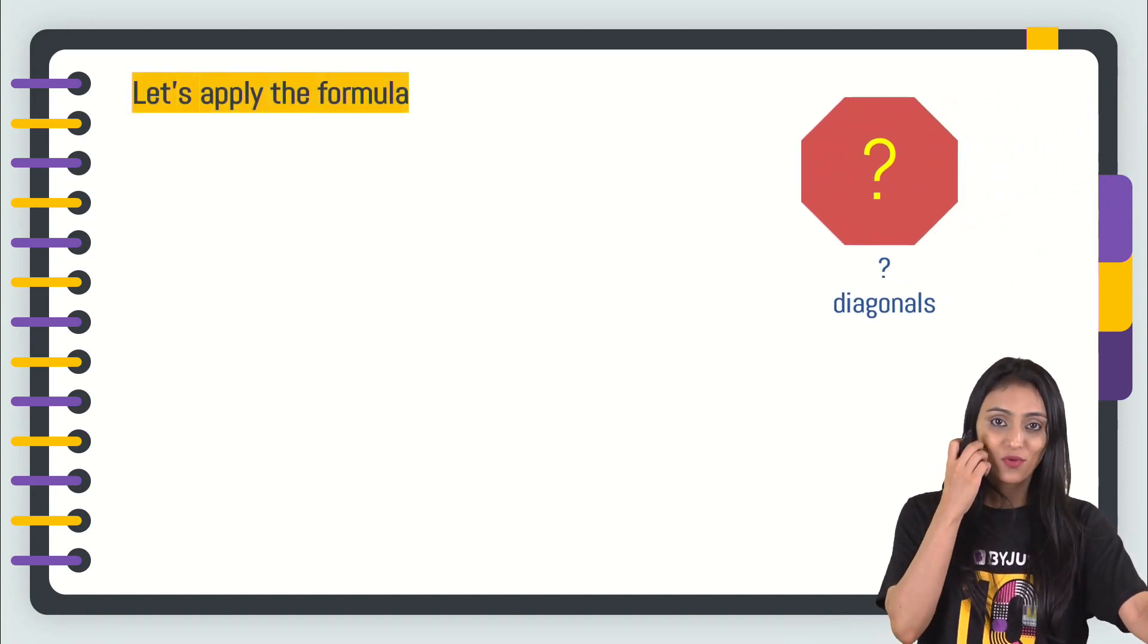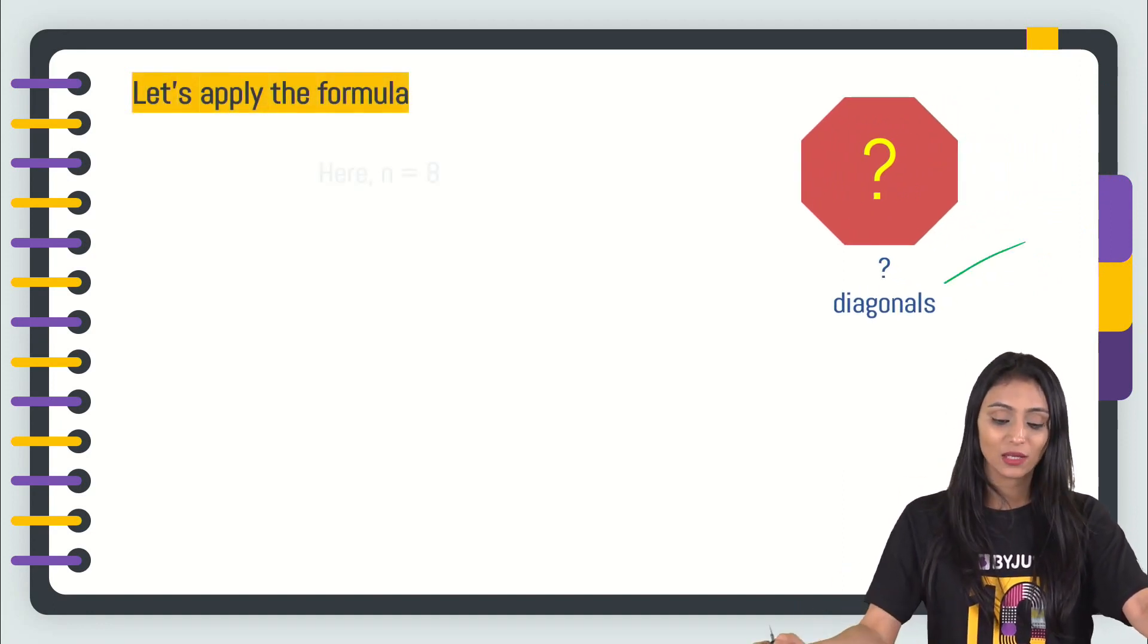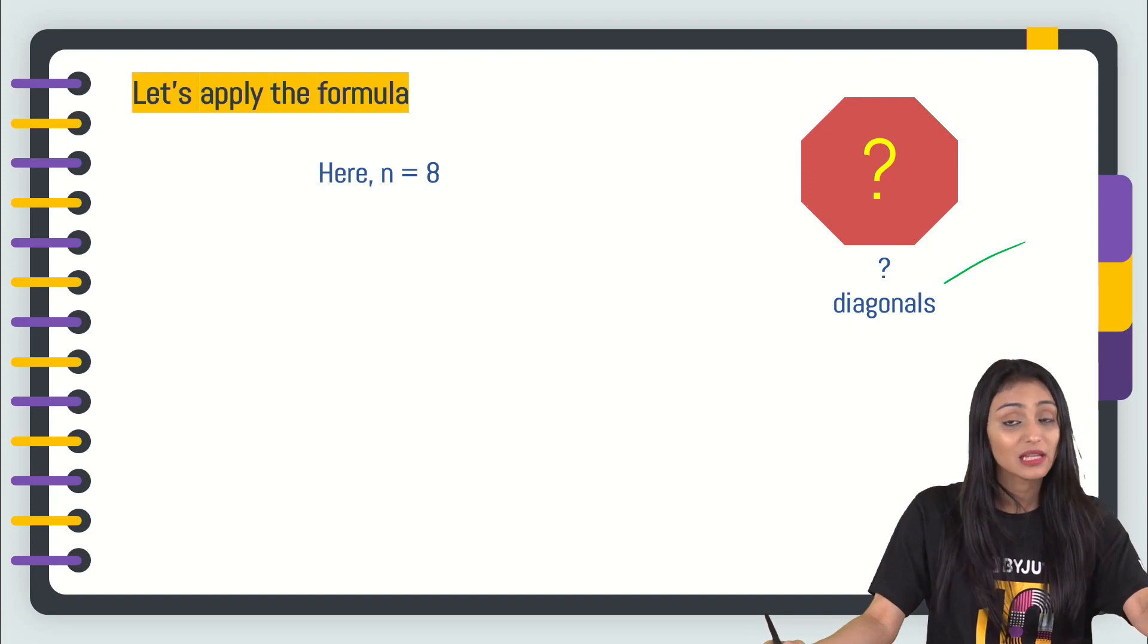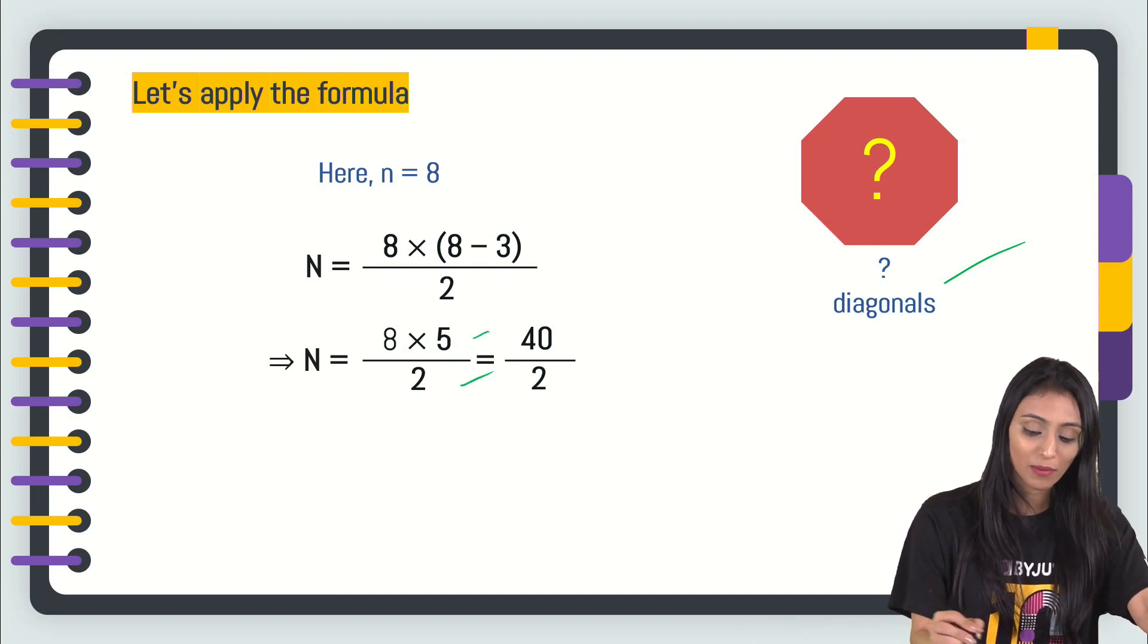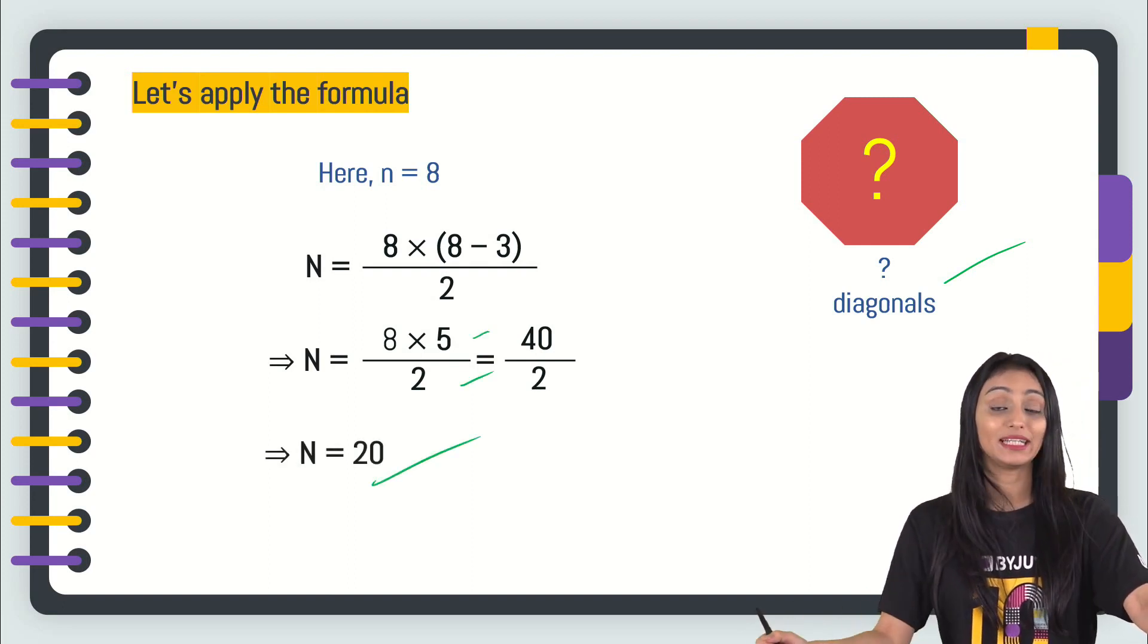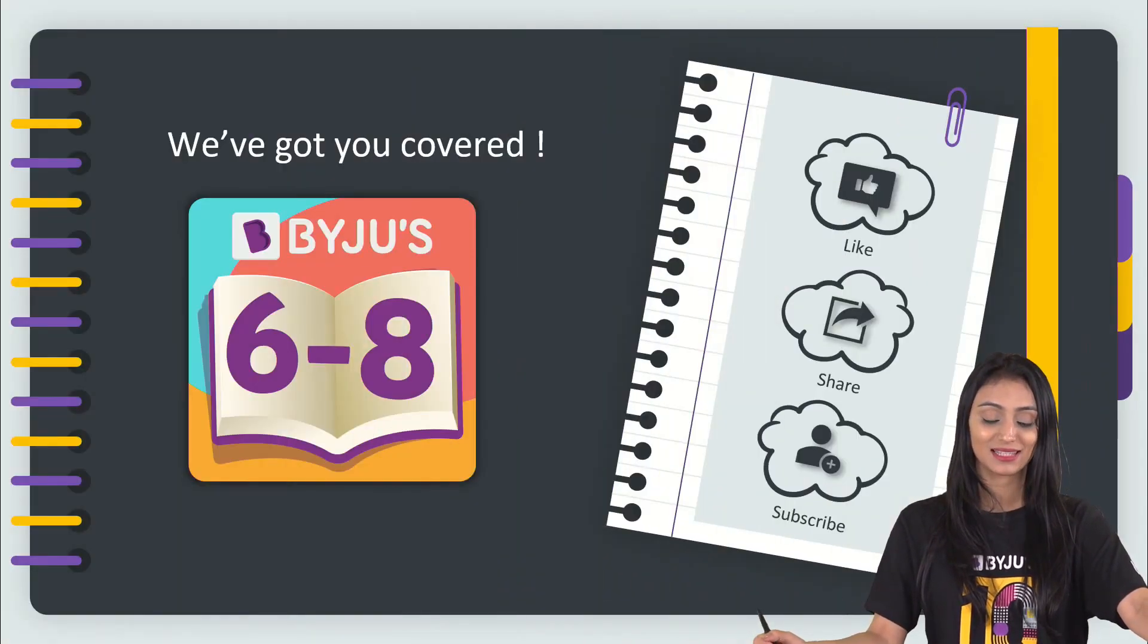So now let's apply this formula that we have just got to find the number of diagonals here. It's an eight-sided figure. So instead of n, I'm just going to put 8 in the formula. It's going to be 8 times 5 by 2. That's 40 by 2. That means 20. 20 diagonals are possible in this case. Very simple one.